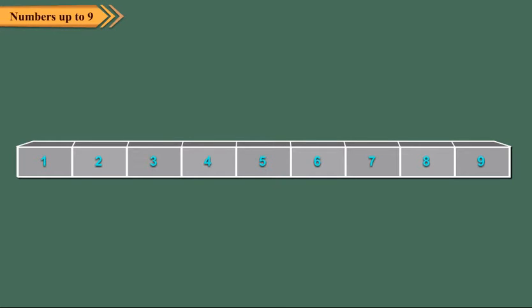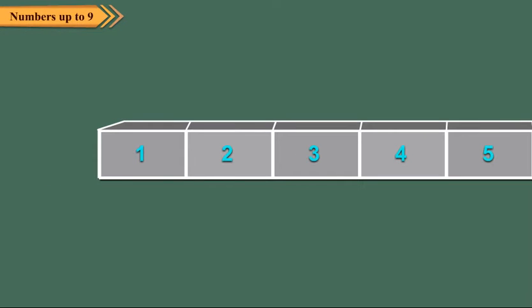Now, observe the numbers given here. Here, one comes before two. Three comes after two. And two is between one and three.